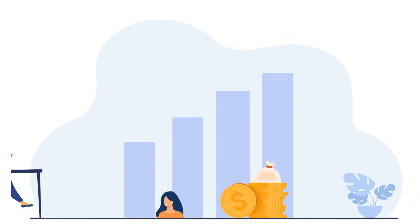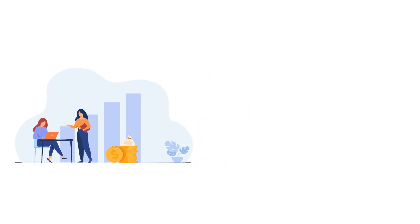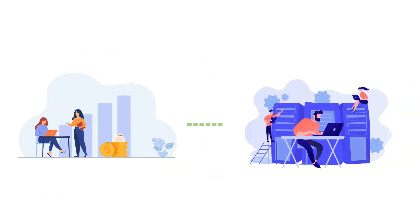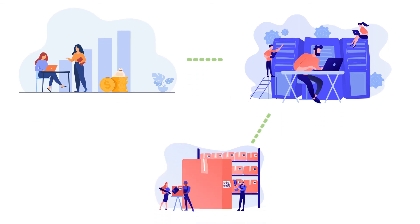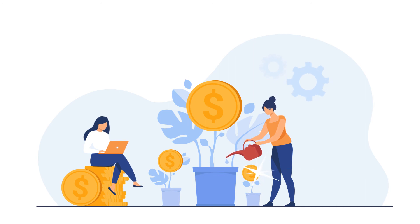The sales team is approached by a customer who wants to buy a product urgently. The sales team can access the updated central information system in real time to inquire about products and inventory. The inventory department also updates the centralized system in real time with information on products and stock. Revenue is increased and the customer is happy because the sales team responded on time.